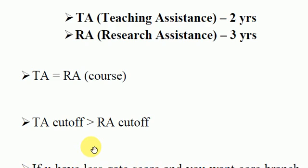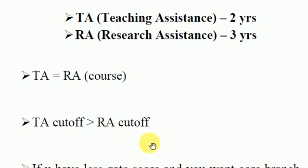If your rank is around 1000 and you want a core branch in IIT Bombay or IISc, getting TA is nearly impossible. But with RA, you can get a core branch at IIT Bombay with a rank of 1000. RA cutoff is always less than TA cutoff, and everything else is the same — you just have to give one extra year.